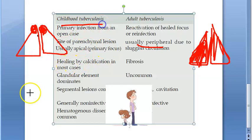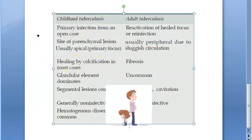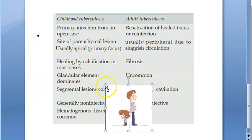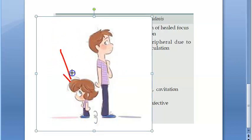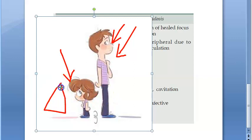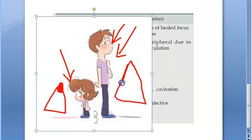Now let us recap childhood tuberculosis versus adult tuberculosis. We saw that in children it will be a primary infection; in adults it will be a reinfection or reactivation of a healed focus. In the child, the site is apical; in adults it will be the periphery.